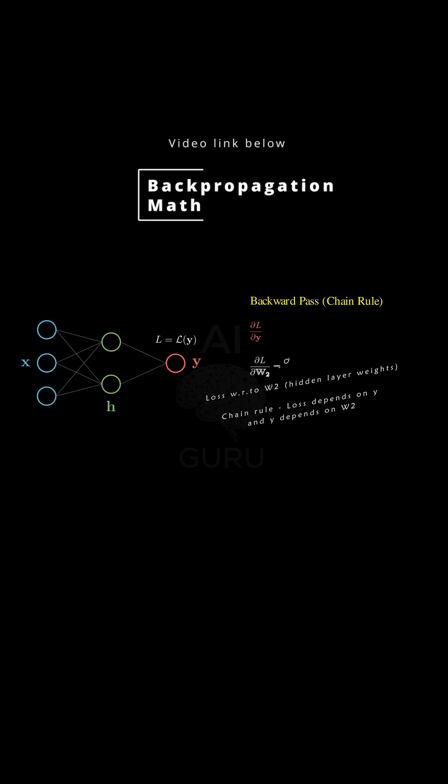And the really beautiful insight for deep learning is that this whole complex process of summing up partial derivatives is mathematically identical to simple matrix multiplication when you use Jacobians.